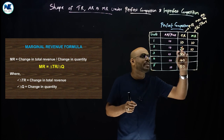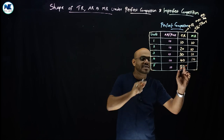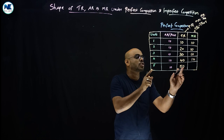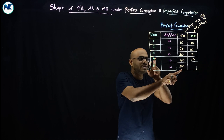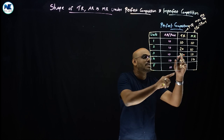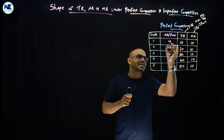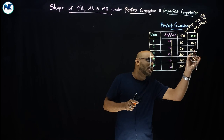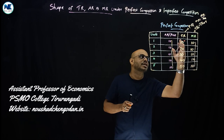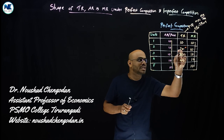Continuing: 30 minus 20 is 10, 40 minus 30 is 10, and 50 minus 40 is equal to 10. So marginal revenue is constant at 10. Average revenue is also 10. Therefore AR equals MR equals 10, and total revenue increases at the same constant rate.